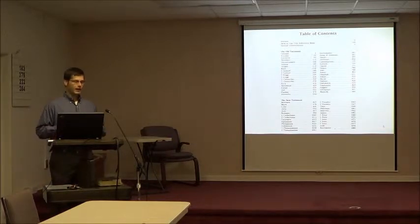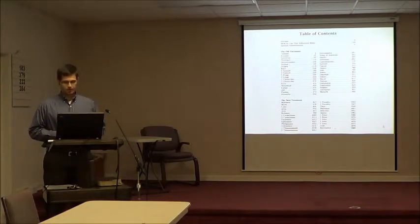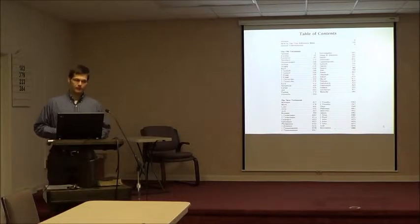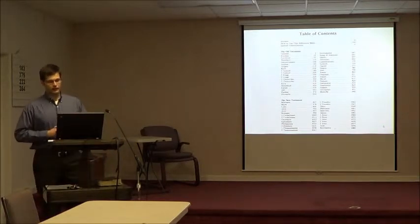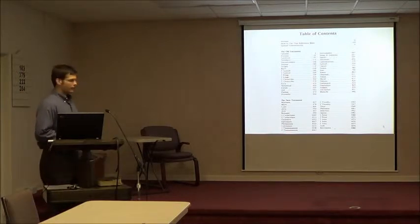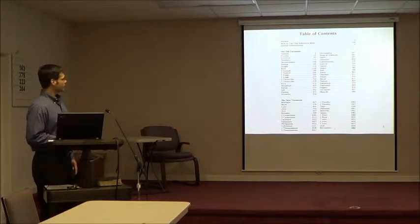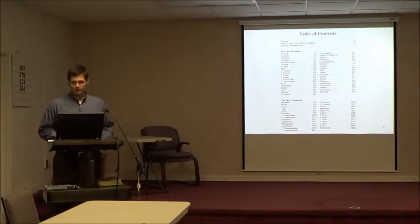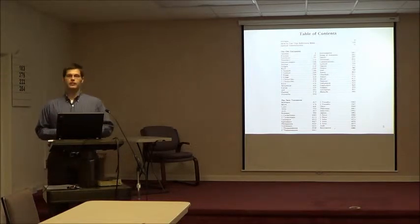When we take a look at the Bible, most of us, if we were to pick it up and open it, would find that in the first few pages there's a table of contents. This is helpful because, just like any other book, it helps us find out where the different books begin within the context of the Bible. You can see the Old Testament books in the top block and the New Testament books in the bottom block, from Genesis on page 1 all the way to Malachi on page 840.